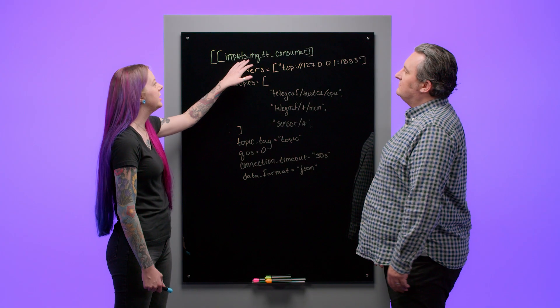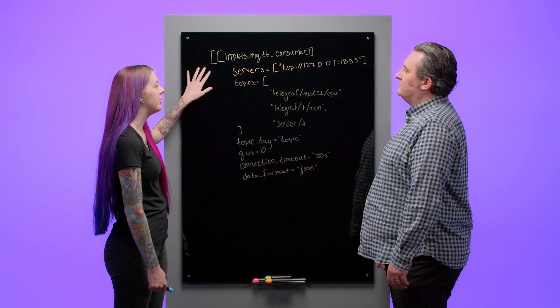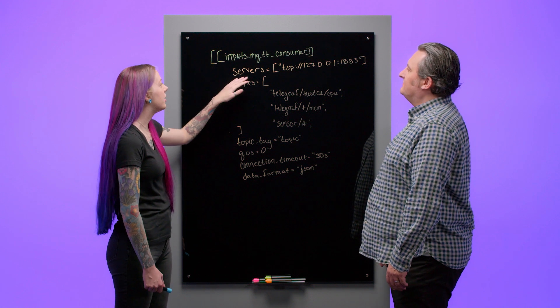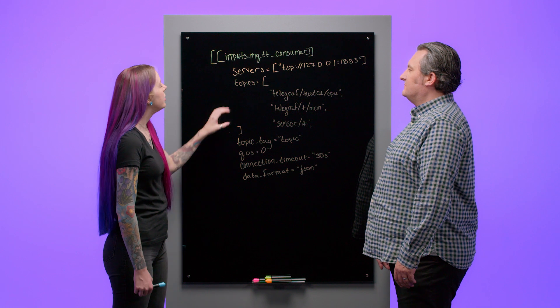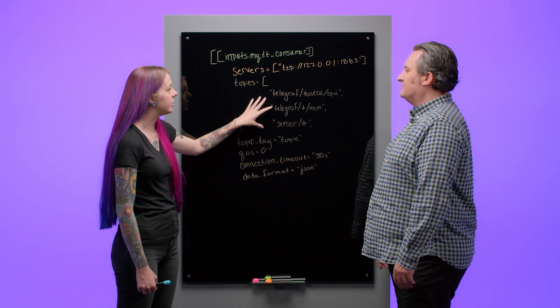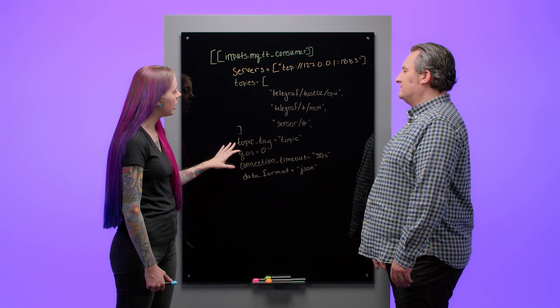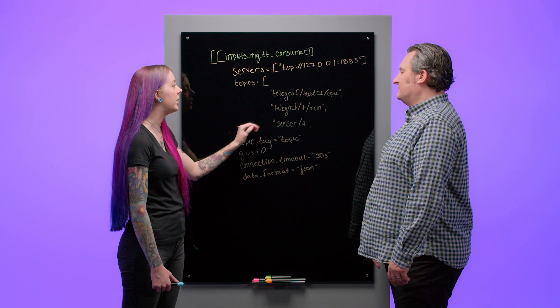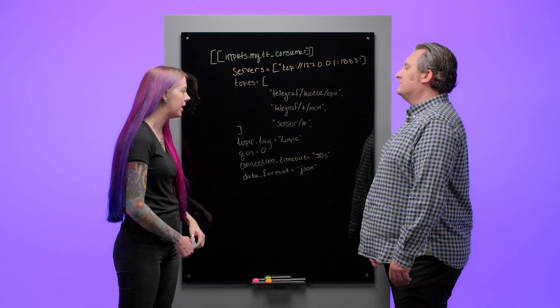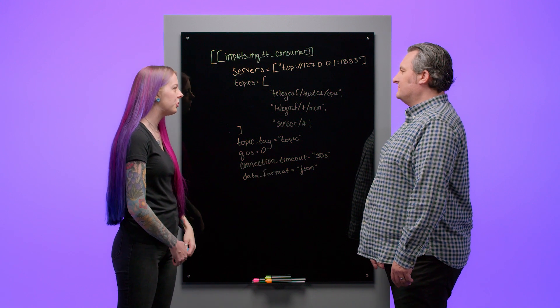Okay, let's start with MQTT. How do I configure Telegraph to get data from an MQTT endpoint? So you're going to start with the MQTT consumer plugin, as you can see here in the double brackets. You're going to want to set your servers to wherever your broker is sending your messages to, your topics to wherever you're going to subscribe, your topic tag. Here we have it set equal to topic. For example, you'll get topic equals to the topic that your data came from. If you omit this, that tag will be dropped altogether.